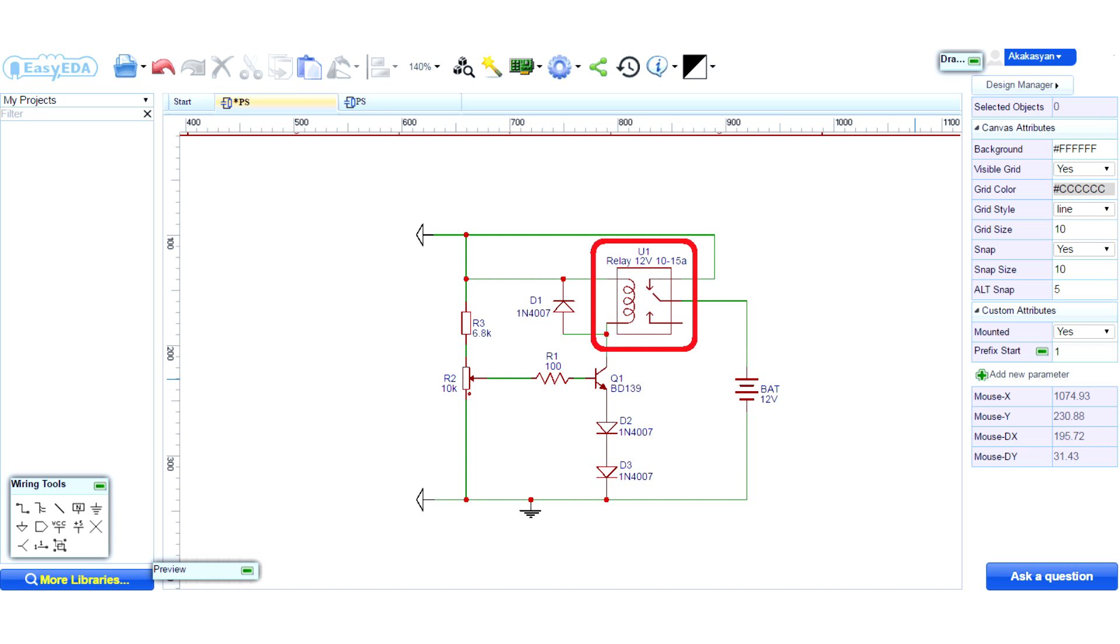As a result, the relay will activate and disconnect its contact, which in a state of rest was closed and through which the charge current flows.